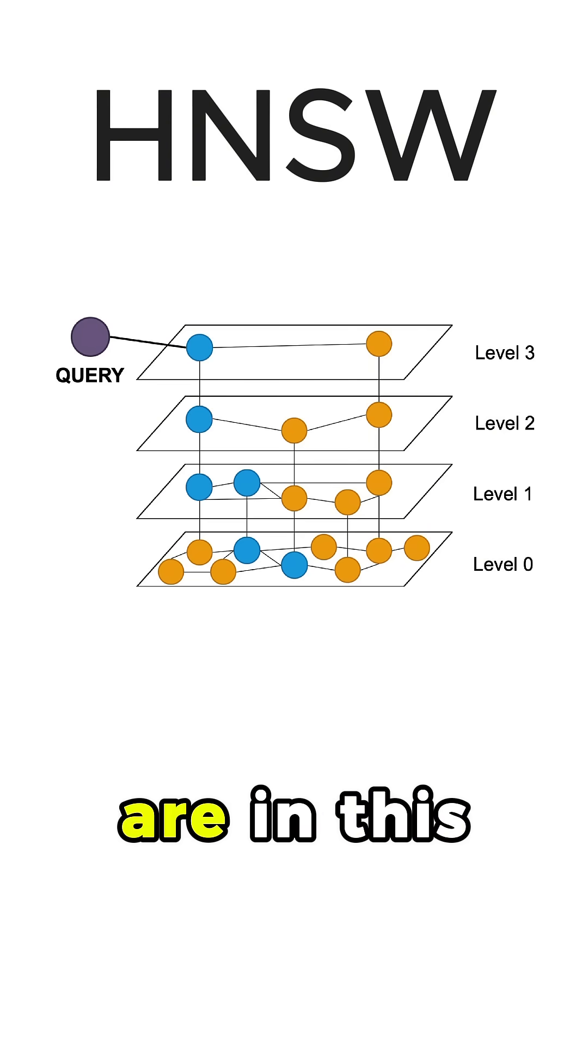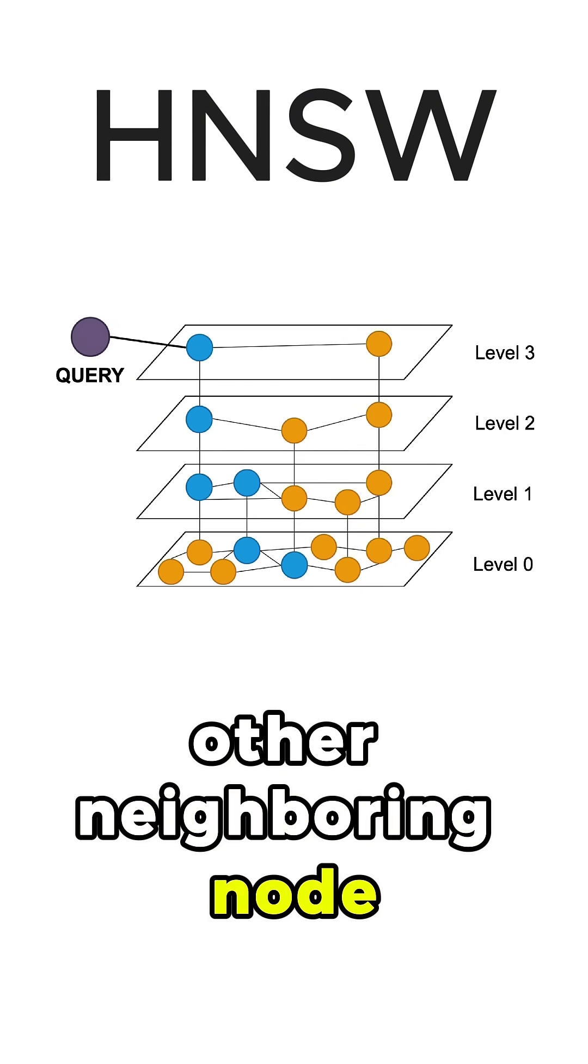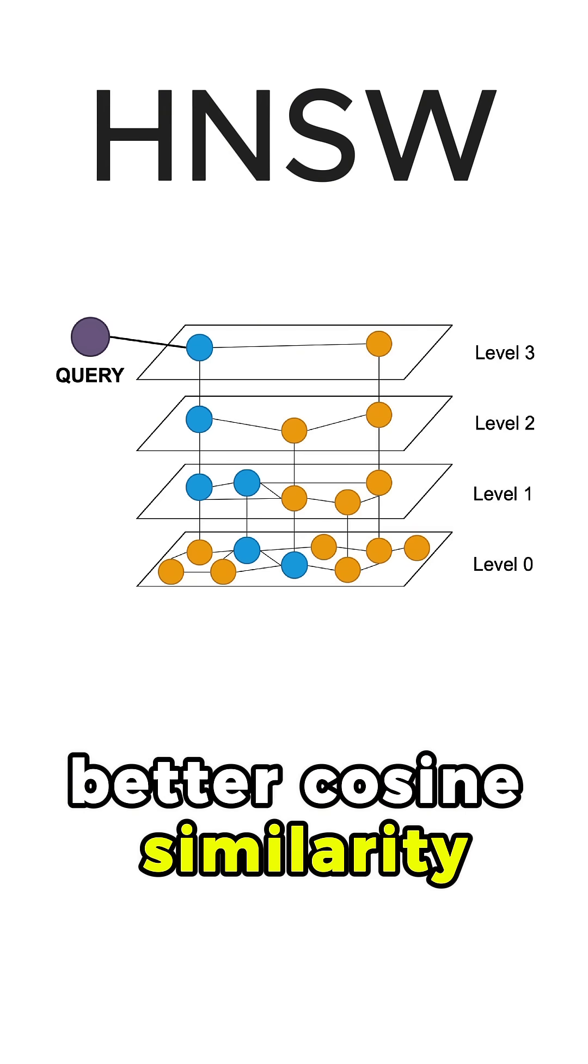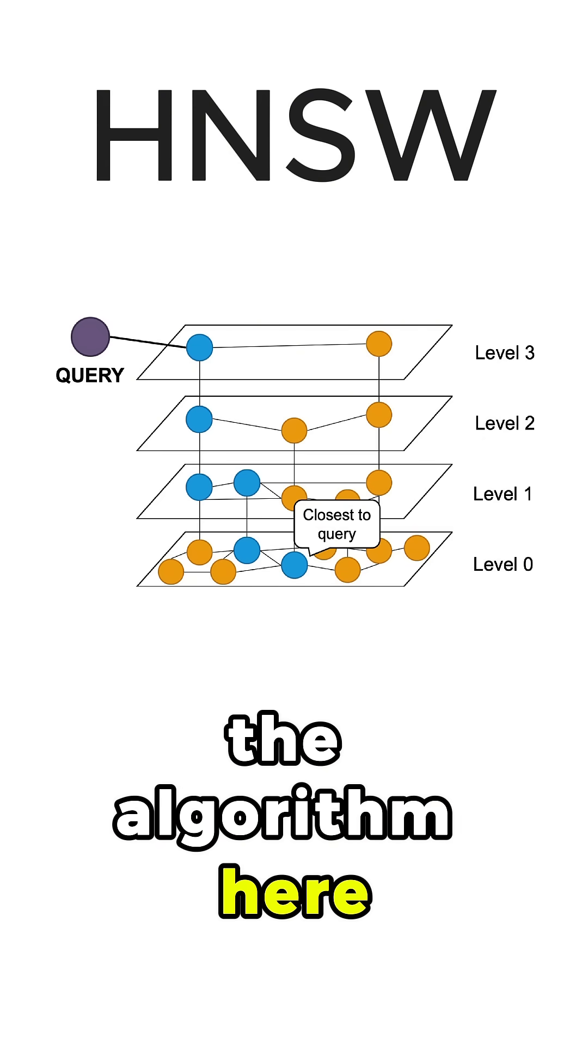Finally, when we are in this node, we observe that there is no other neighboring node that has a better cosine similarity, so we stop the algorithm here.